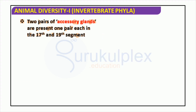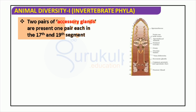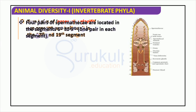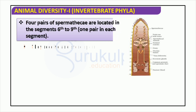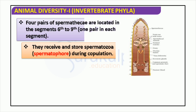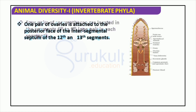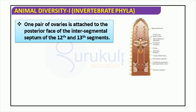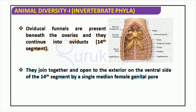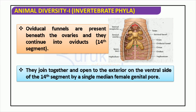This presentation covers animal diversity from the invertebrate phyla. We look at two sets of accessory glands located in the 17th and 19th segments, four pairs of spermatheca in segments 6 to 9, and a single pair of ovaries found in the 12th and 13th segments. Oviducal funnels are positioned beneath the ovaries and proceed to oviducts. Oviducts join together and discharge to the exterior through a single median female genital pore situated on the ventral side of the 14th segment. This characteristic is key for those studying invertebrate phyla.